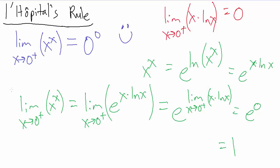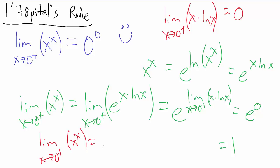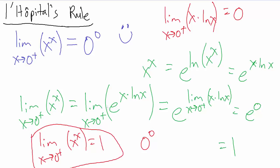Using that result, we get e to the 0, which is just 1. So the limit as x goes to 0 from the positive side of x to the x equals 1. That's actually interesting because even though 0 to the 0 doesn't have a numeric value as an indeterminate form, this limit does have a value and it's 1. That's another example of L'Hôpital's rule — more examples coming up in future videos.